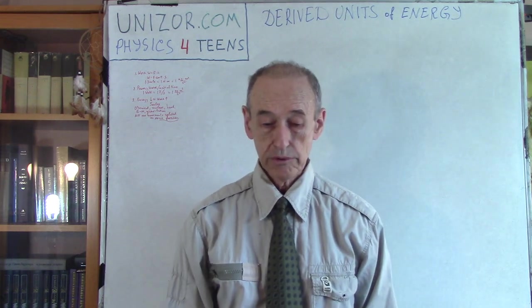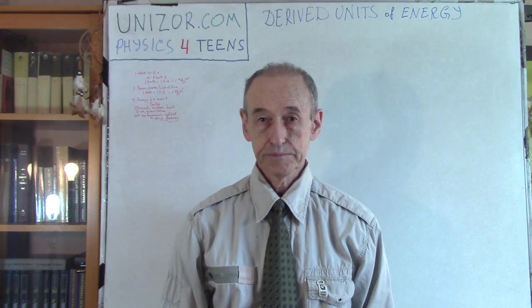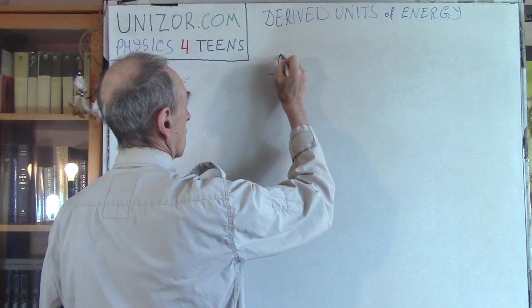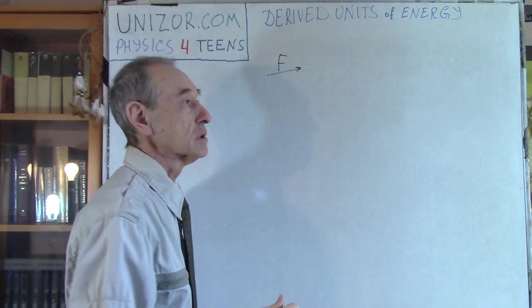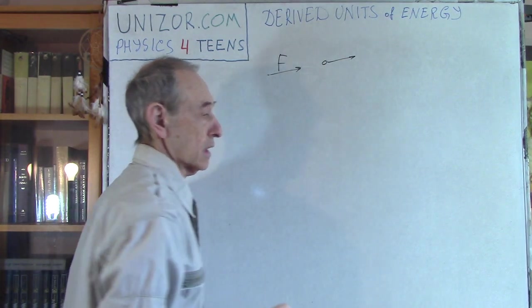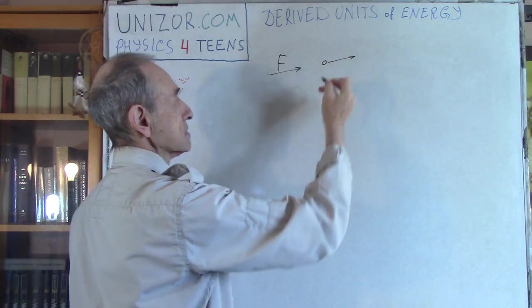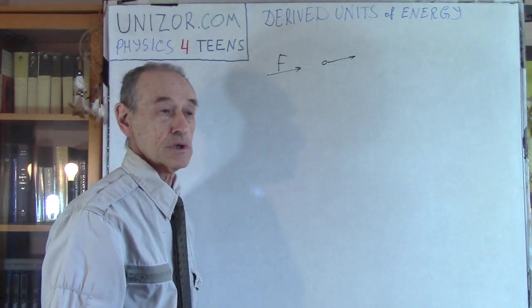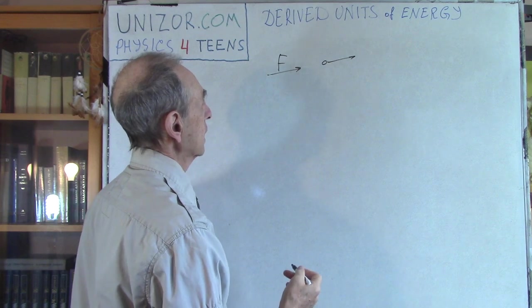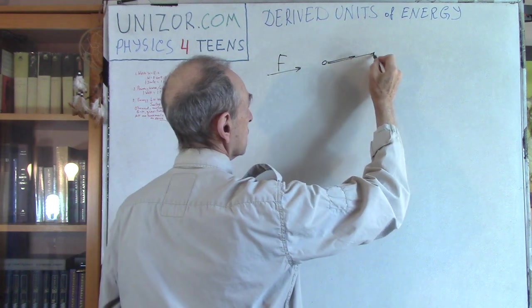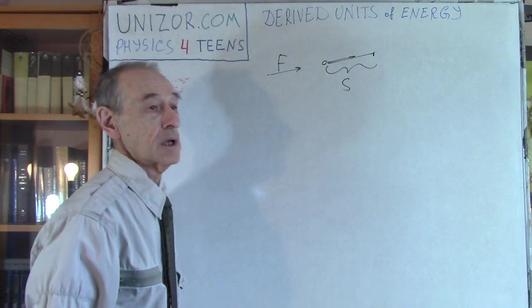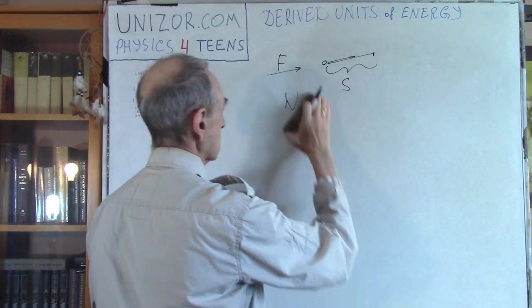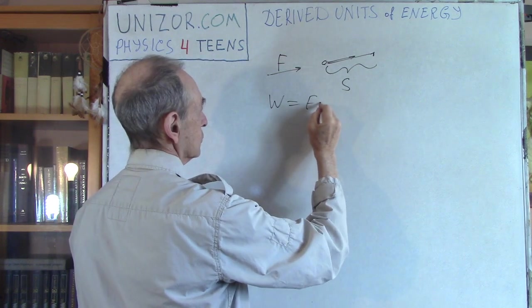We will start talking about energy and units. It's measured with the concept of work. What is work? By definition, if you have a constant force, force is a vector so there is a direction and a magnitude, and it forces some object to move in the same direction the force is directed with certain acceleration according to the second Newton's law. As a result, this particular object is moving at a certain distance, let's say S, during a certain time period. By definition, the work which this particular force is performing is equal to force times distance, W equals F times S.